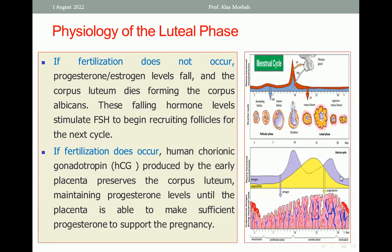If fertilization happens, the corpus luteum maintains its work to produce progesterone to maintain the coming pregnancy. It is very important as a source of progesterone early in pregnancy. But if fertilization doesn't occur, the progesterone and estrogen levels fall and the corpus luteum dies, forming the corpus albicans. These falling hormone levels stimulate FSH to begin recruiting follicles for the next cycle.